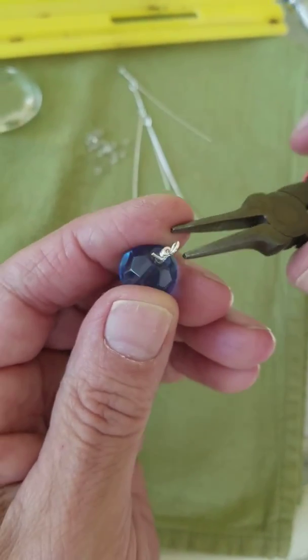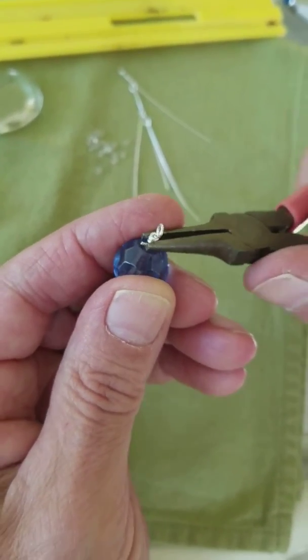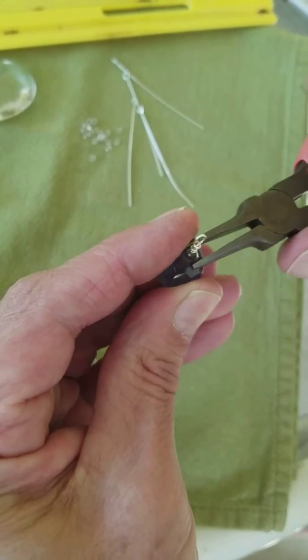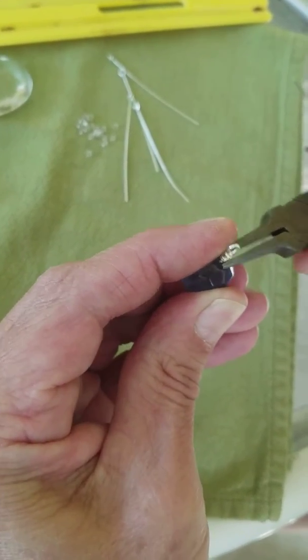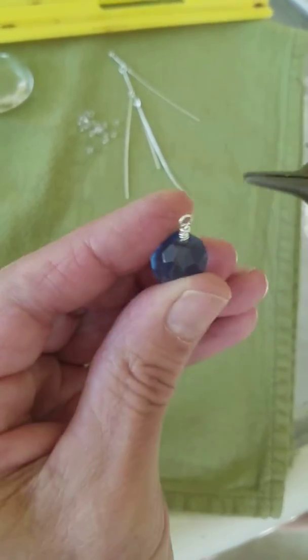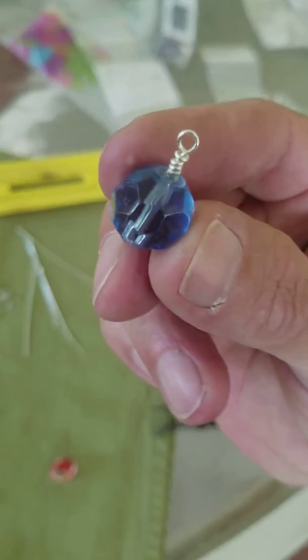Take your flat nose pliers, come back behind that little tit, and just squeeze it in. Squeeze that in until it's all one coil. And you have wire wrapped.